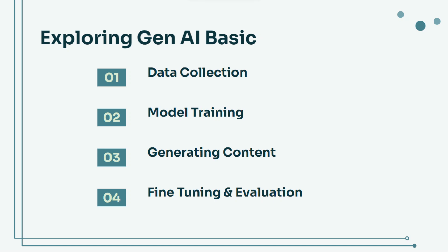Three: generating content. Once trained, the model can generate new content based on the patterns it has learned. For instance, a text model can write essays, stories, or even code. The quality of the generated content depends on how well the model was trained and the quality of the input data.